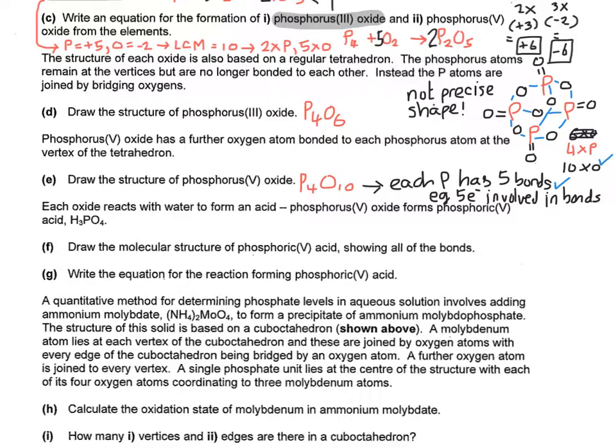So then it says each oxide reacts with water to form an acid. Phosphorus(V) oxide, for example, forms phosphoric(V) acid, which is H3PO4, which does actually come up in A-level chemistry. It's a dehydrating agent. So draw the molecular structure, it says, of phosphoric(V) acid, showing all of the bonds. So we can start with the P double bond oxygen, because we've seen from the previous question that this actually happens. So now we've got PO4. We now need to add the hydrogens in, because it needs to behave as an acid. So I've put the hydrogen in black, but it does say to show all the bonds. So you'd end up with something like that.